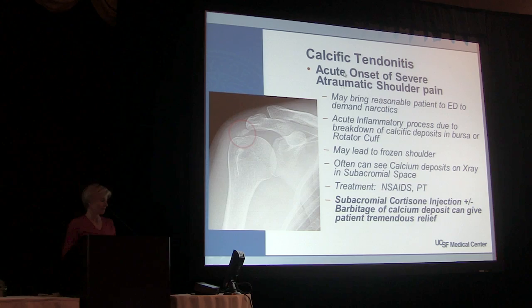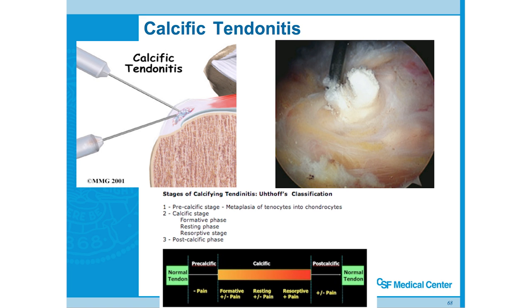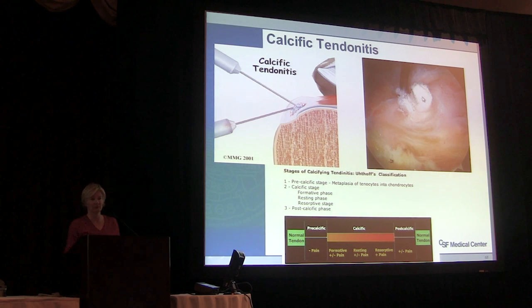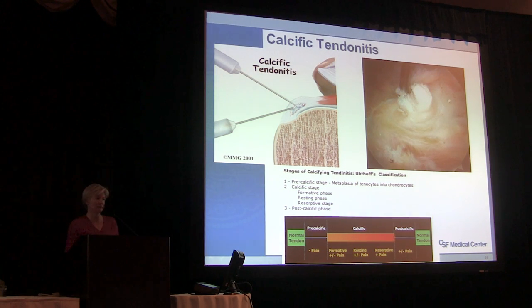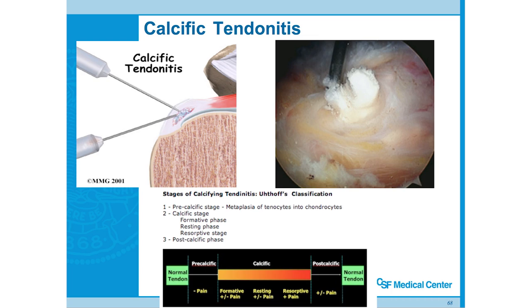You break it up a little bit, inject the cortisone, and patients improve significantly. Sometimes there's a large amount of calcium in the subacromial space that needs to be cleaned out arthroscopically — it looks like toothpaste when it comes out. Sometimes it's in the rotator cuff itself and you have to repair the cuff after removing it. It can cause a lot of stiffness and issues for patients.